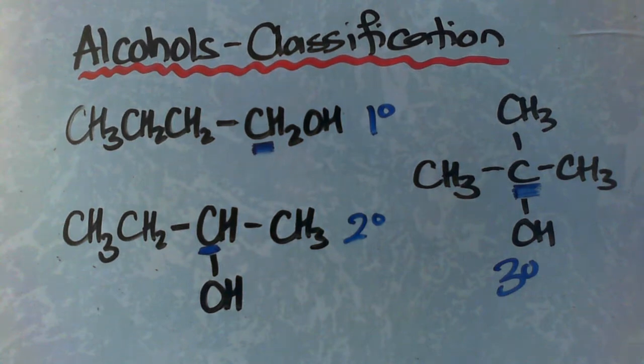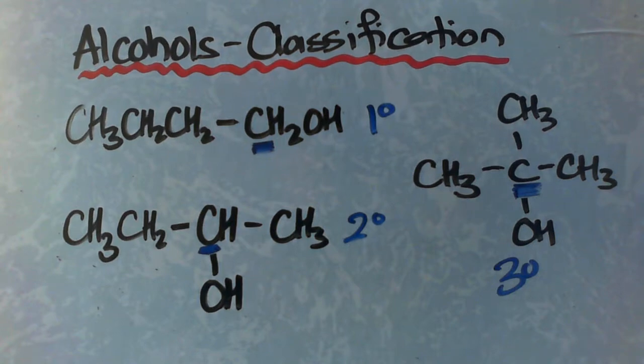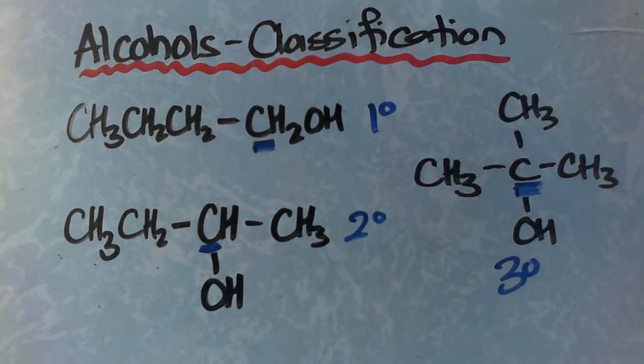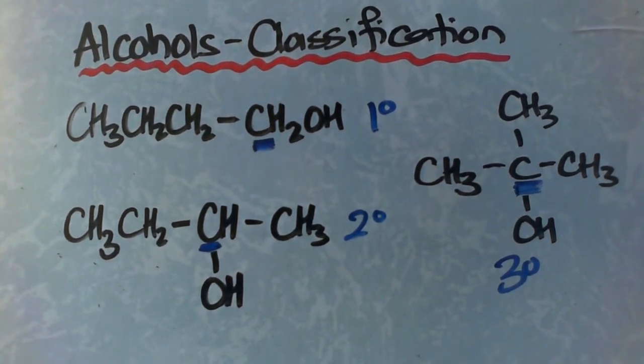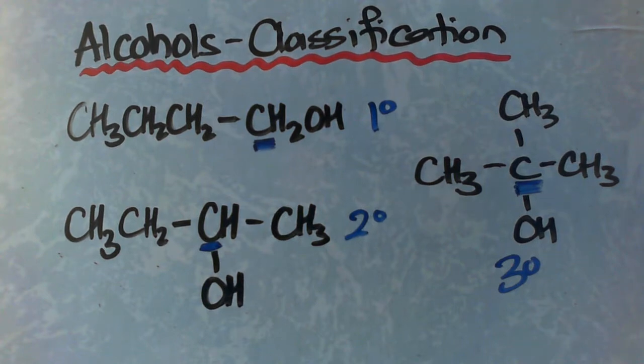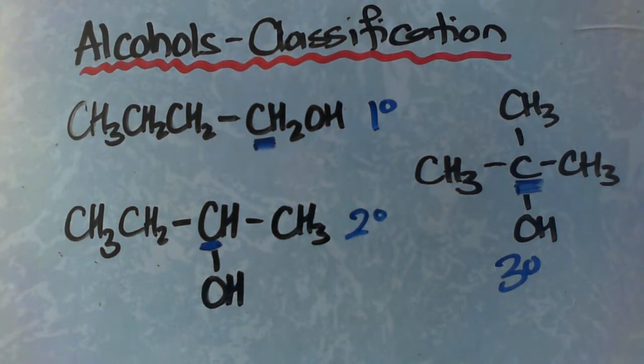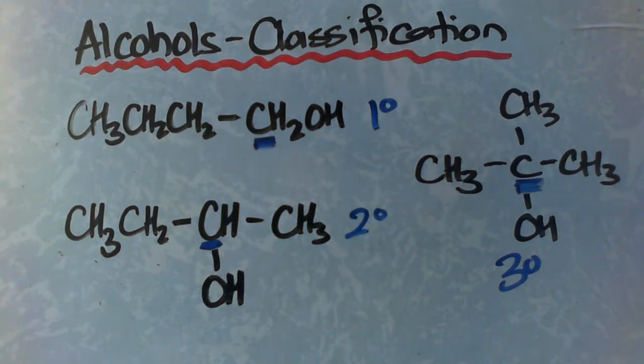When we look at the isomers of alcohols, we have to also classify these as well as naming them. So just before I start, we're going to go through the quick naming. These are three of the four structural isomers of C4H9OH or butanol.